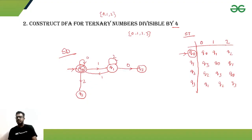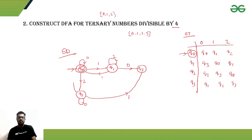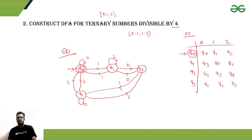From q2, getting zero stays in q2, getting one goes to q3, and getting two goes to q0. From q3, getting zero goes to q1, getting one goes to q2, and getting two stays in q3.